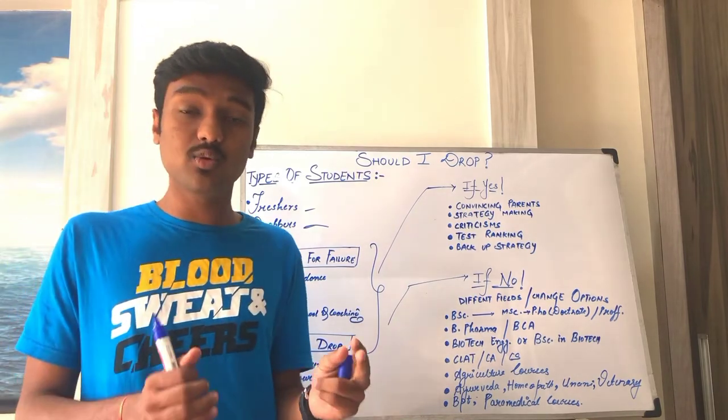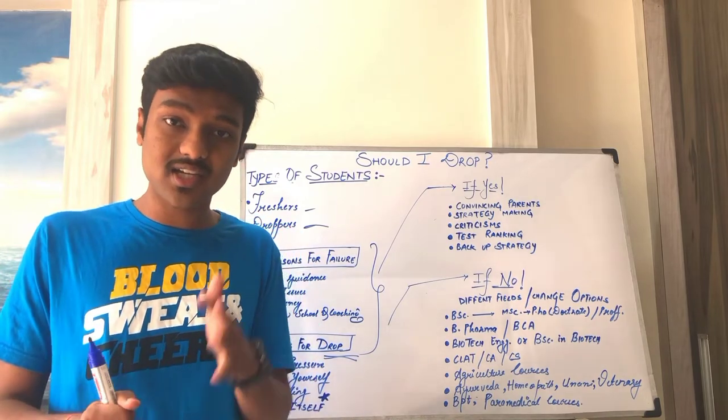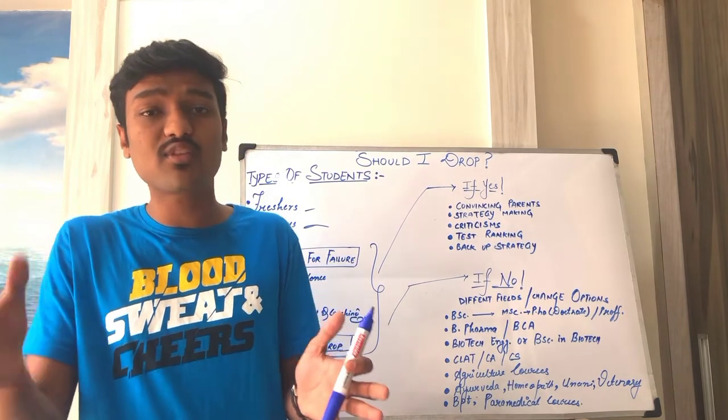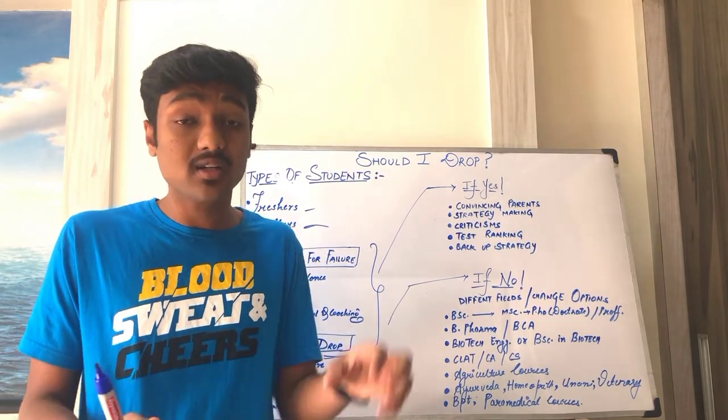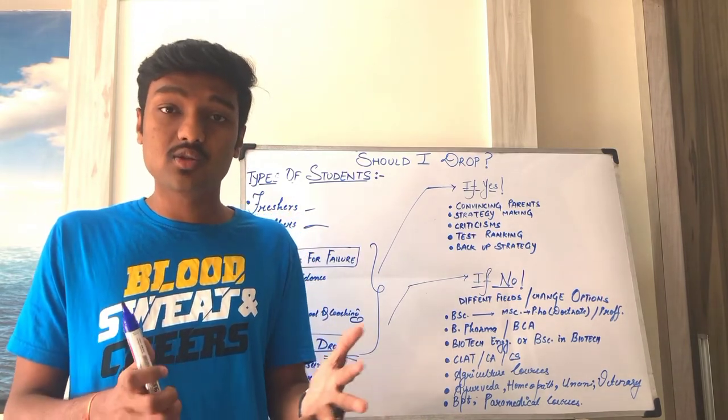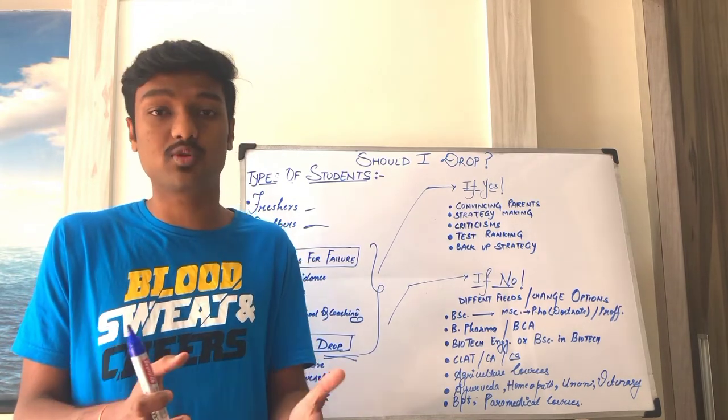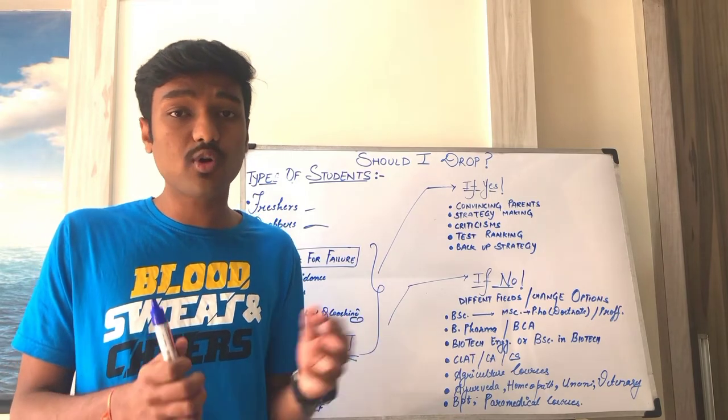The second point comes - you need to convince your parents. Sit with them and tell them that after 10 years, my age will be 33, 34, or 35. That's why there's hardly any difference. But in which position I am, that will have an effect. This is my decision and I need your support. I think they will surely understand and they will support you. I want to highlight that this is an emotional reason just to convince your parents. We have to decide beforehand whether we have to drop or not. Our decision should be on a practical basis, not an emotional one.